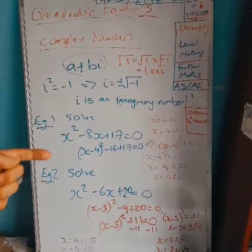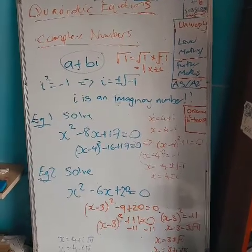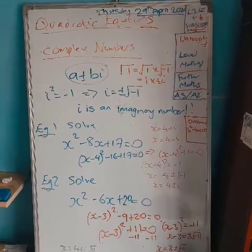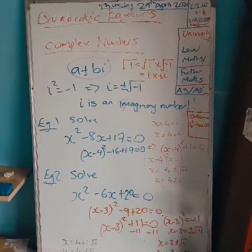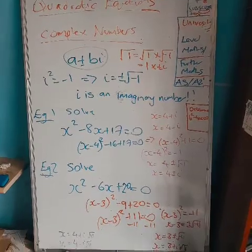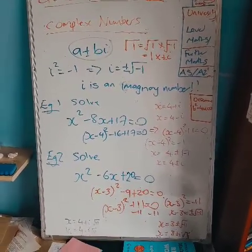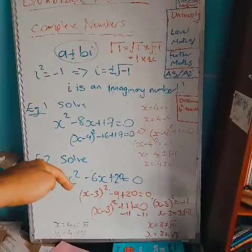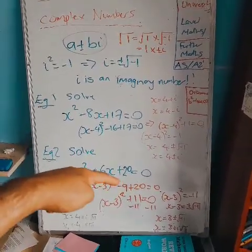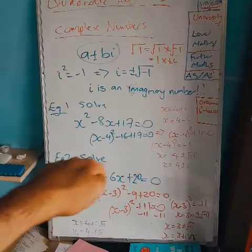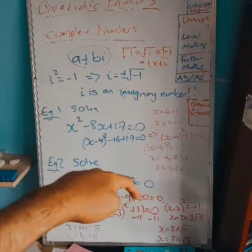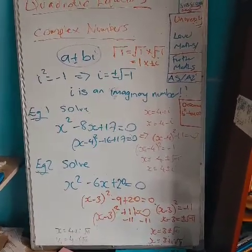Example two: solve x squared minus 6x plus 20 equals zero. Again I could use the quadratic formula — x equals minus b plus or minus the square root of b squared minus 4ac, all over 2a. Completing the square: halving the coefficient of x and squaring gives x minus 3 all squared, minus 9 plus 20 equals zero, which simplifies to x minus 3 all squared plus 11 equals zero. Rearranging: x minus 3 all squared equals minus 11.